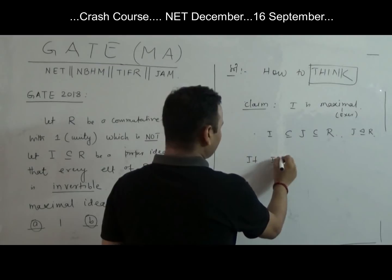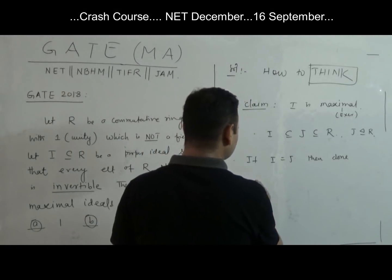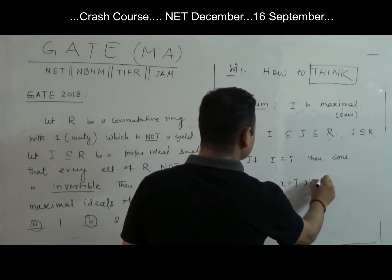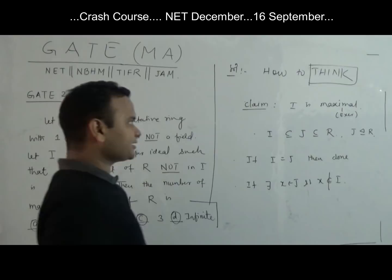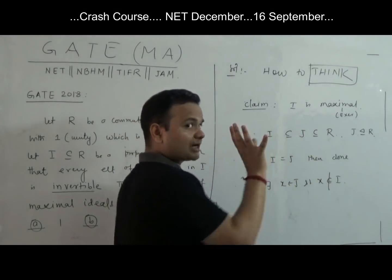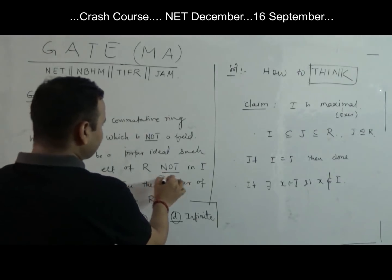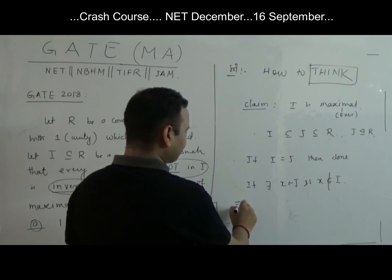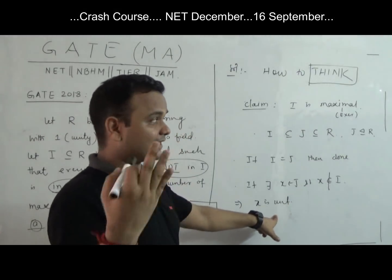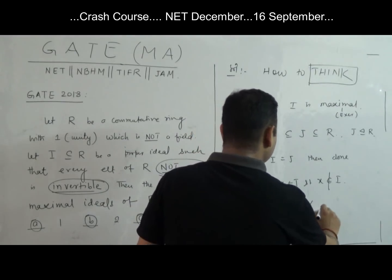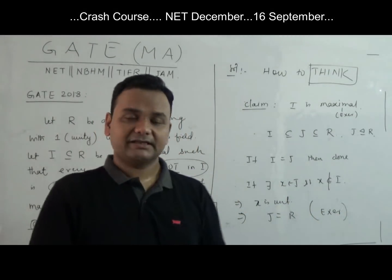If I equals J, we are done. If I is not equal to J, then there exists an element x in J such that x does not belong to I. By the given condition, if some element is not in I, it is invertible — so x is a unit. Now, if an ideal contains a unit element, then that ideal is going to be the whole ring. Therefore J equals R. I will leave this as an exercise: prove that if any ideal contains a unit element, it equals the whole ring.